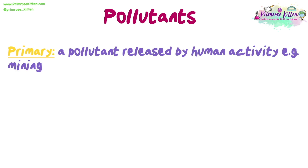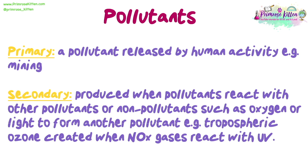A primary pollutant is released directly by human activity, for example mining. Secondary pollutants are produced when pollutants react with other pollutants or non-pollutants such as oxygen or light to form another pollutant — for example, tropospheric ozone created when NOx gases react with UV.